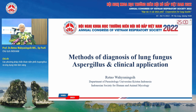On October 25 this year, WHO released a fungal pathogen list that caused diseases in humans. One of them, the most critical one, is Aspergillus, followed by Candida. And today I will talk about the diagnosis of this fungus, the disease — Aspergillus — and its clinical application.